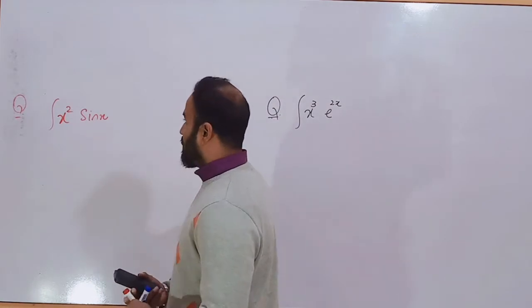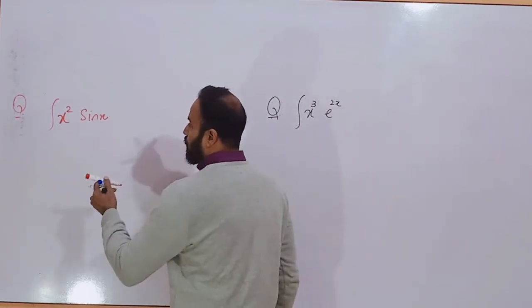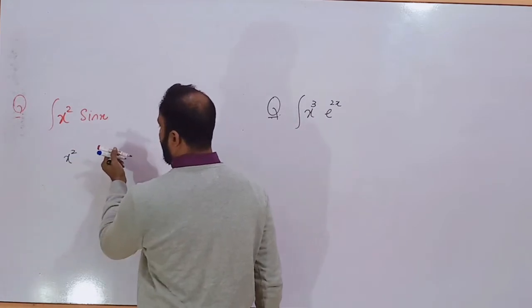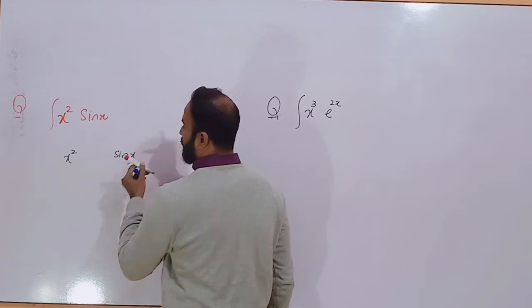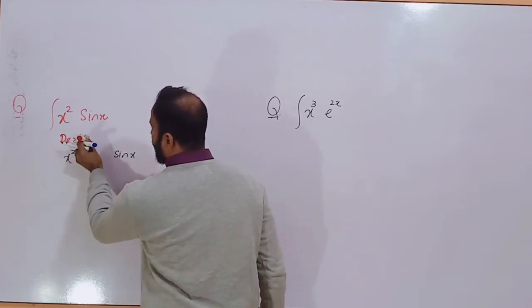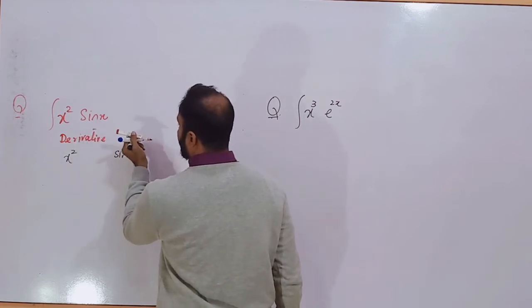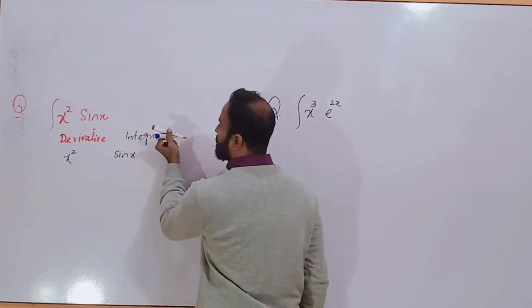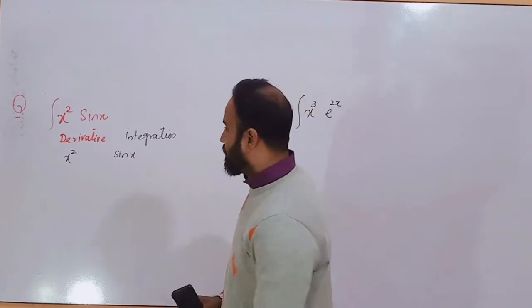If you have two functions — one is the algebraic and the second one is the trigonometric — take the algebraic function and the other one is the trigonometric function. You should take the derivative of the algebraic and take the integration of the trigonometric function.